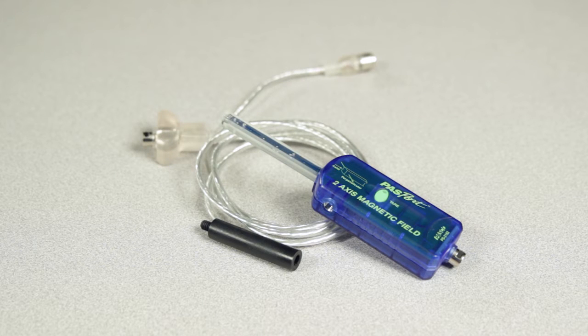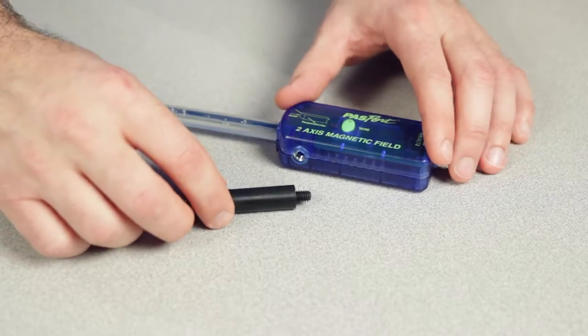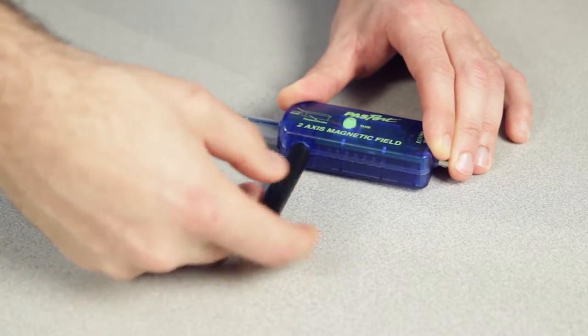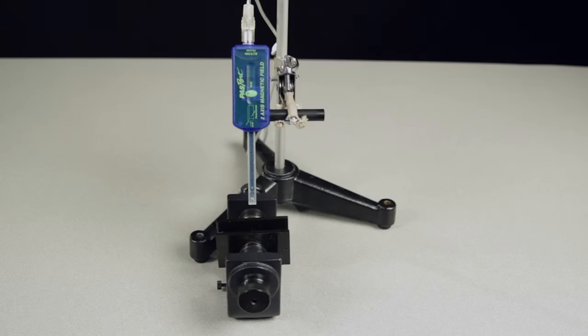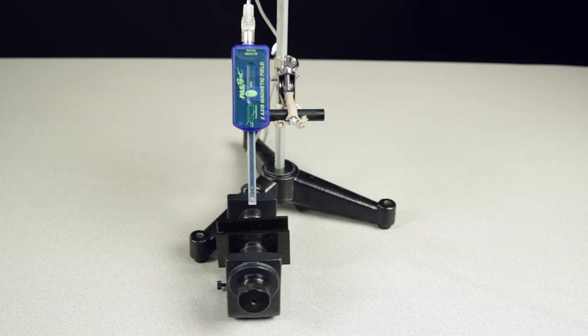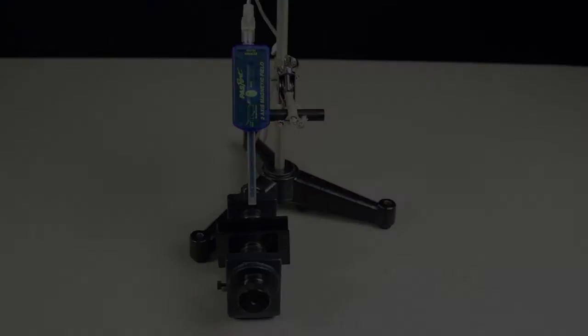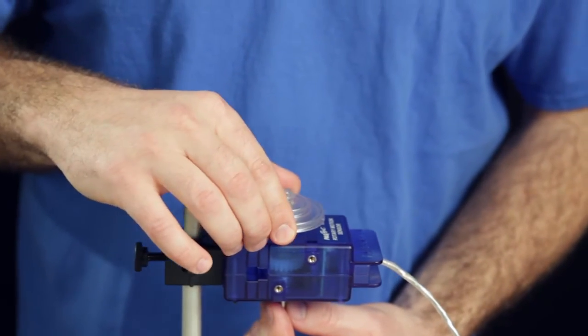Included with the sensor are a Passport extension cable and a small sensor handle that can be mounted to the threaded socket on the side of the sensor. This handle is convenient when holding the sensor but also convenient for mounting the sensor to a rod stand using a clamp or to the axle of a rotary motion sensor.